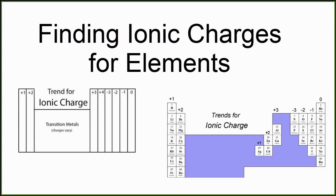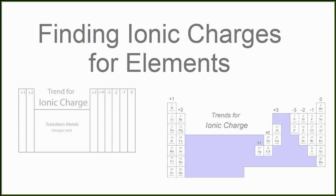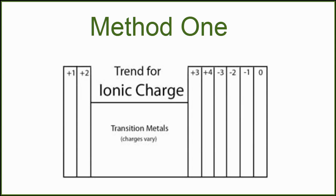So there are two main methods to find the ionic charge for elements on the periodic table. First, you can memorize the simplified table shown below.